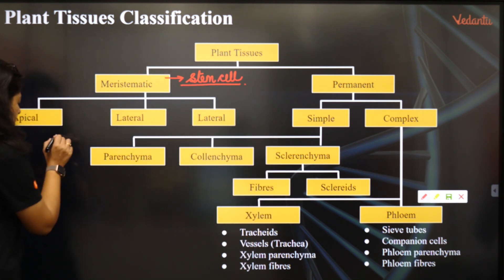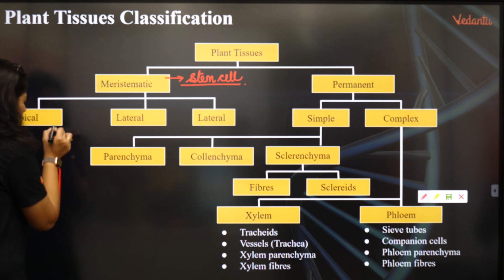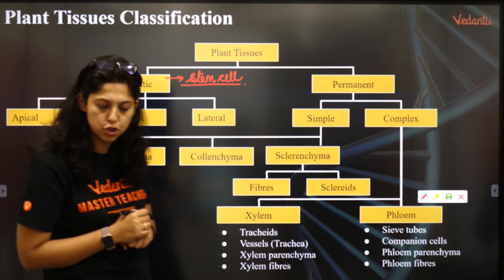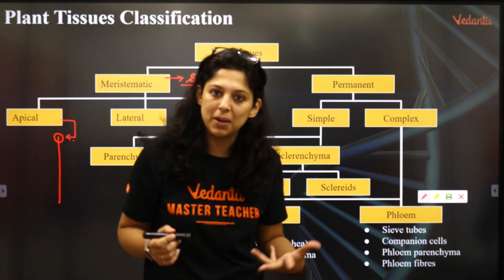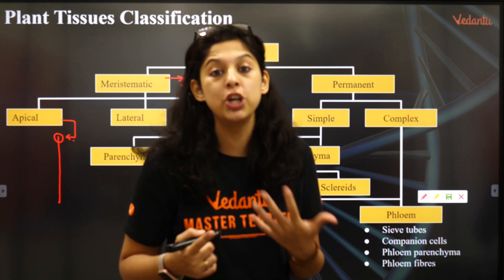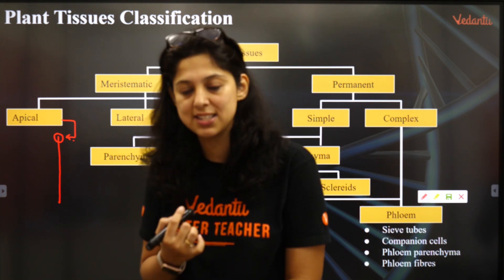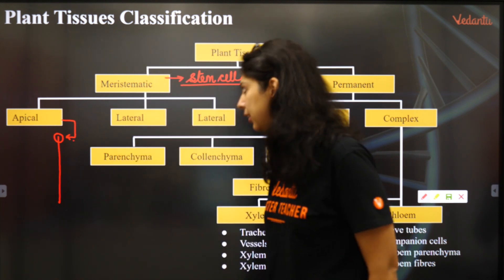The meristematic tissue, if it is present at the tip of the plant, is called the apical meristematic tissue. Apical meristems secrete indole acetic acid and indole butyric acid.